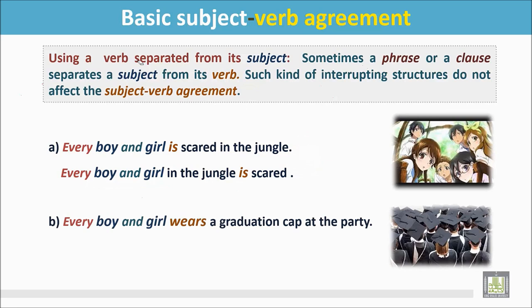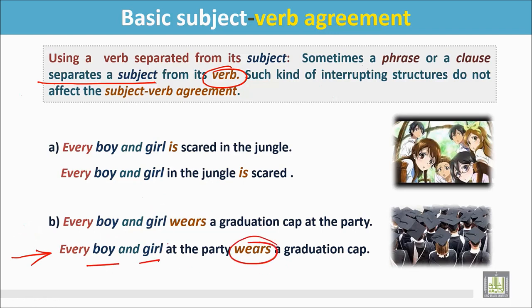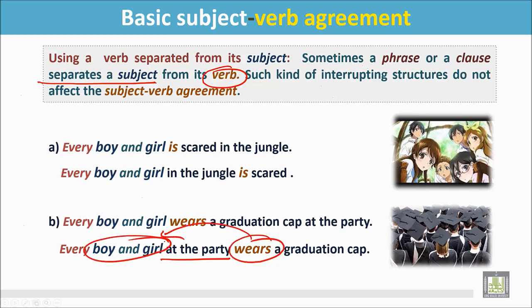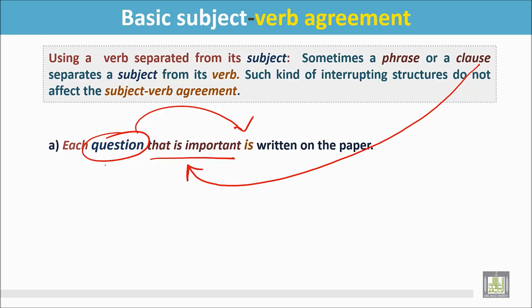See another example. The sentence can also separate its subject from its verb: Every boy and girl at the party wears a graduation cap. In the first version, boy and girl is followed by the verb immediately. In the second version, the subject is separated from the verb 'wears' by the phrase 'at the party.' Similarly: Each question that is important is written on the paper — where a clause separates the subject from its verb.